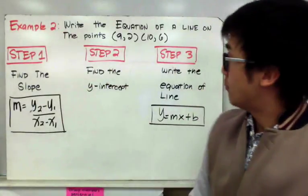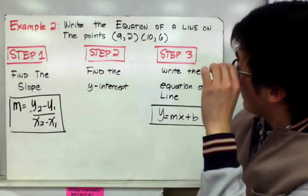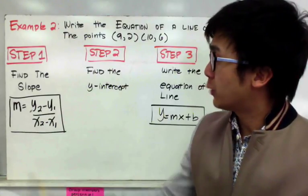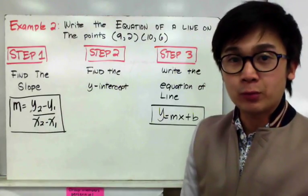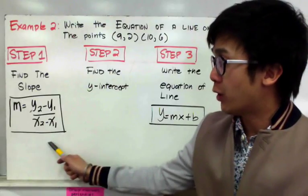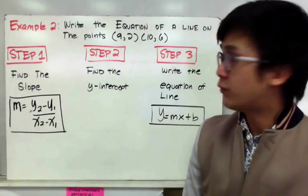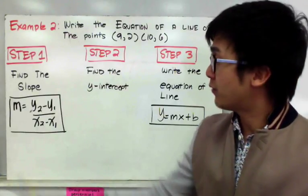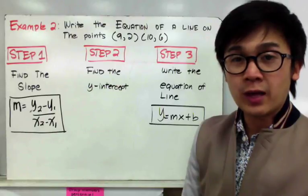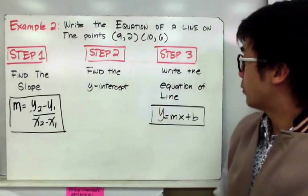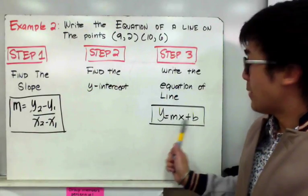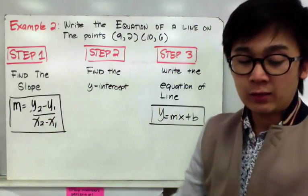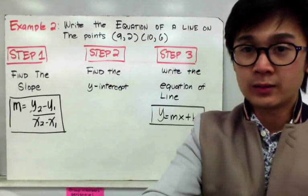For the second example, we need to write the equation of a line through the points (9, 2) and (10, 6). To recall the steps from example 1: step 1 is to find the slope using the formula; step 2 is to find the y-intercept using the slope-intercept form; and step 3 is to write the equation of a line by replacing m and b. Let's apply those steps to this example.